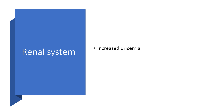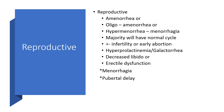In the renal system, there is increased creatinine. In the reproductive system — more women are affected. Amenorrhea may occur — menses not showing at all. Or there may be oligomenorrhea — small quantity.